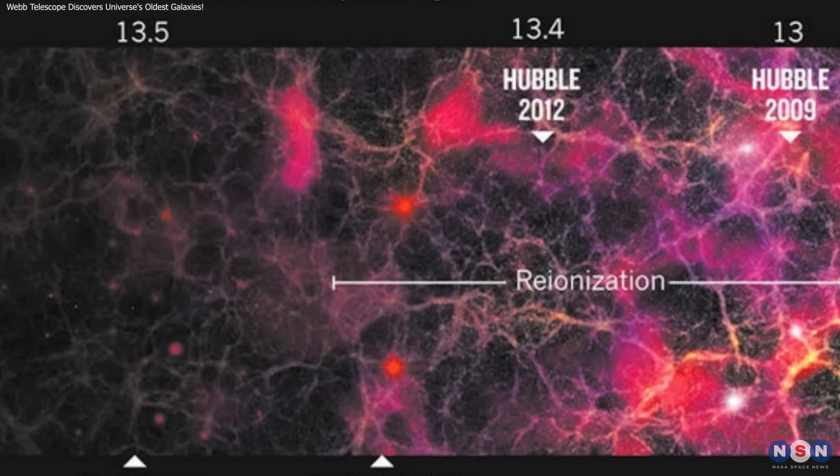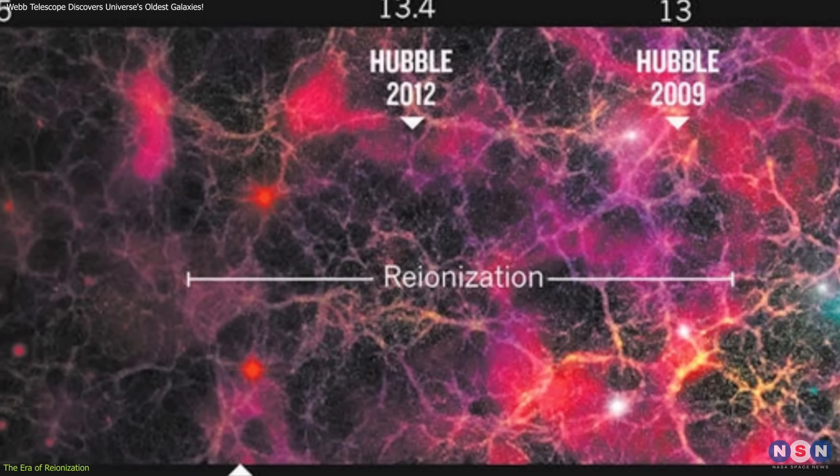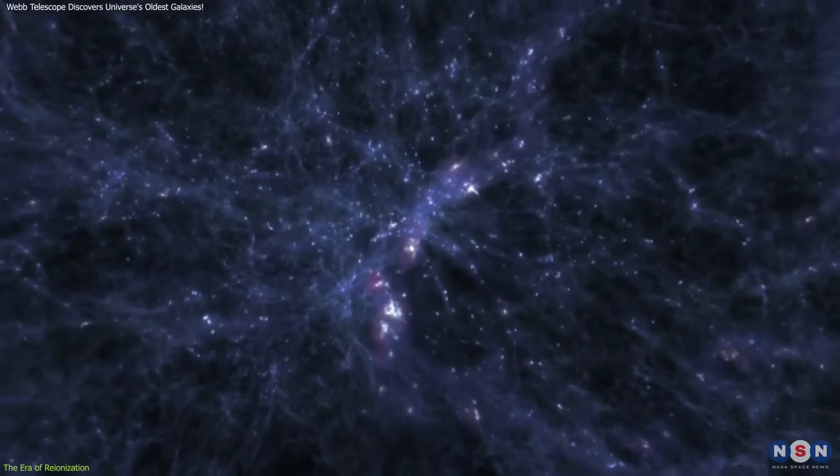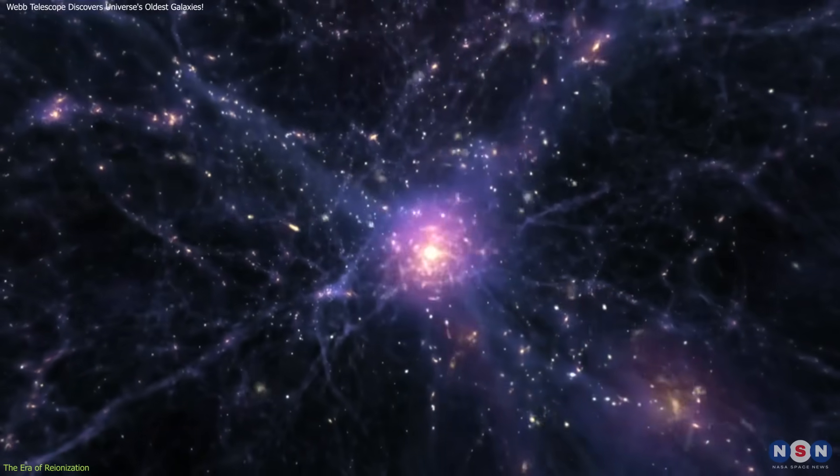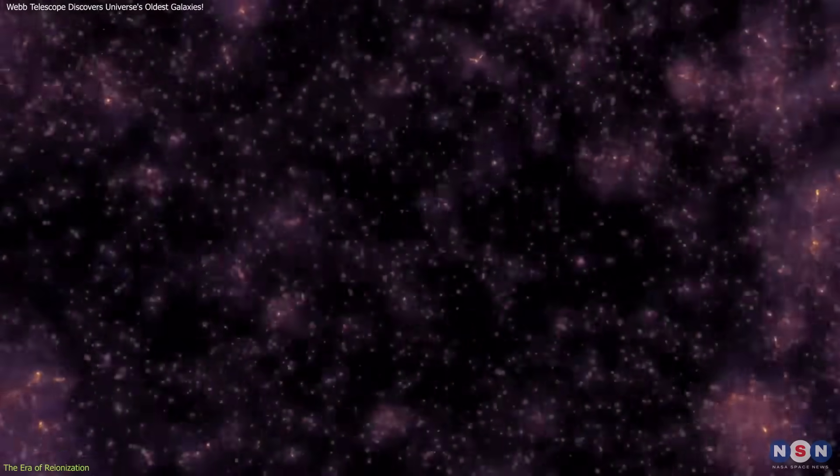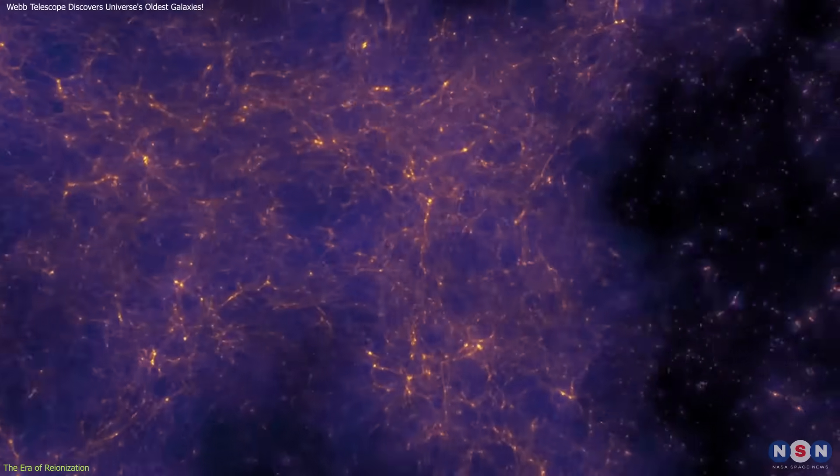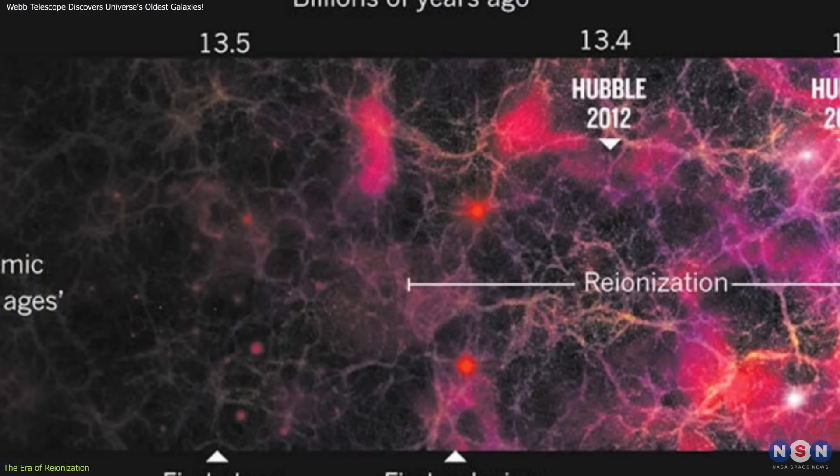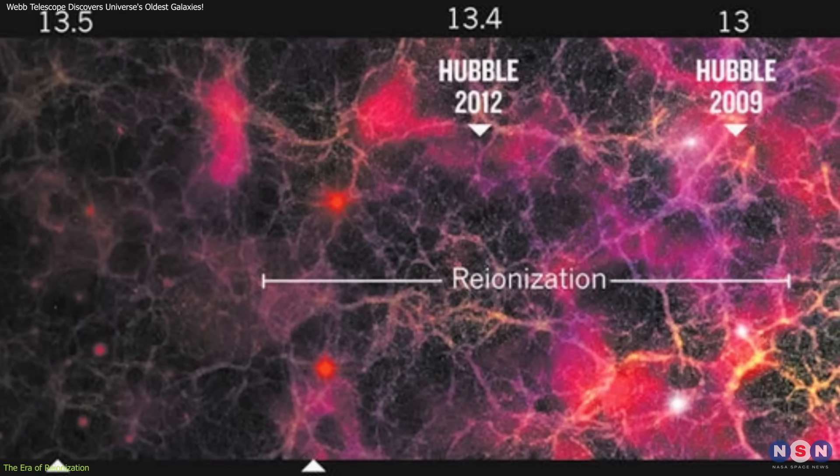The era of reionization is a pivotal period in cosmic history. It marks the time when the first stars and galaxies emerged, transforming the universe from an opaque, dense state to a transparent, observable one. This period, which occurred after the Big Bang, is crucial for understanding the evolution of the universe.